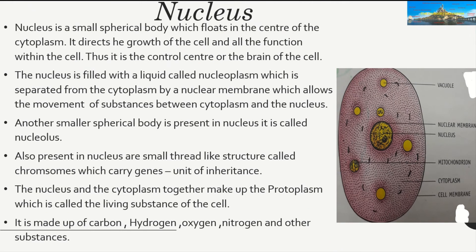Next is the nucleus, which is very important in a cell. Just like the brain controls our body, the nucleus controls the cell — hence it is called the brain of the cell. It directs the growth of the cell and all functions within the cell.